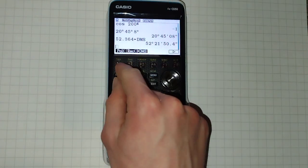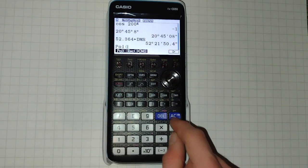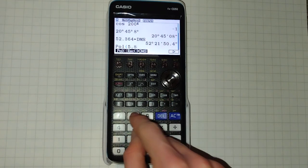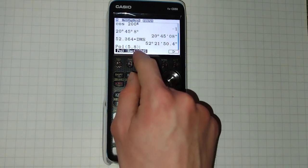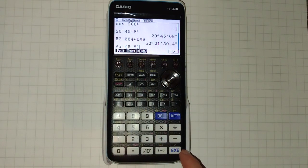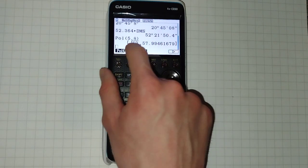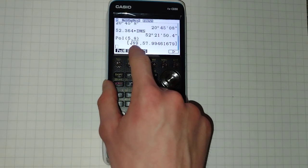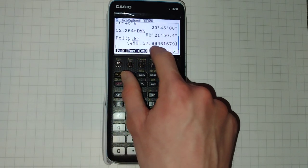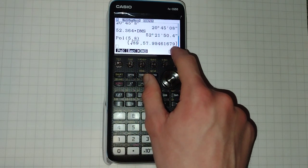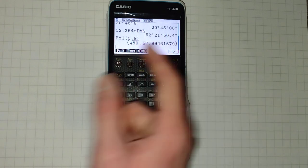So as a quick example, if you want to convert the rectangular coordinate 5, 8 into polar, type in that and it gives us this. Where this is our modulus, root 89, the distance from the origin. And 57.99461679 degrees is our angle.